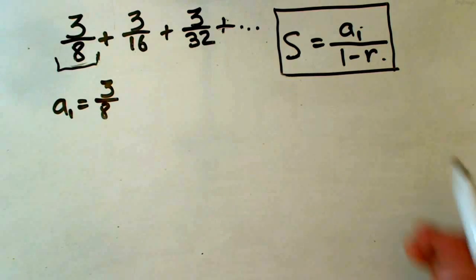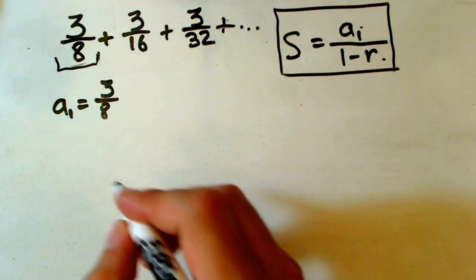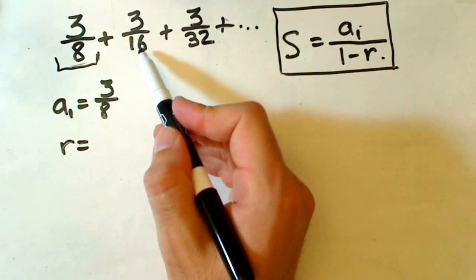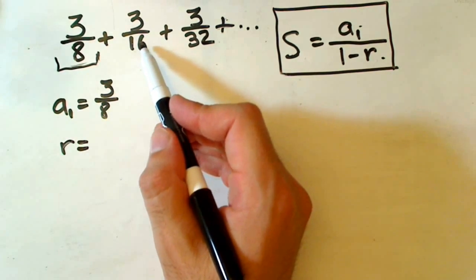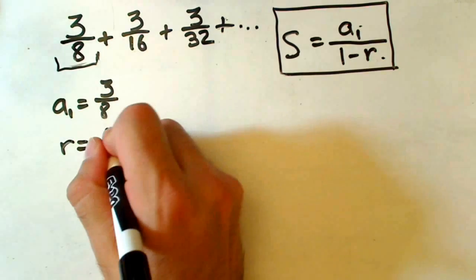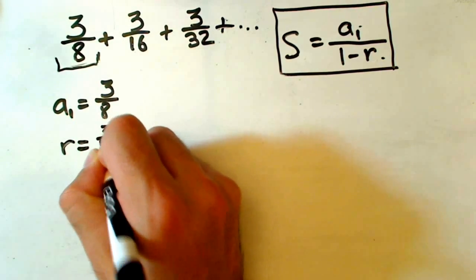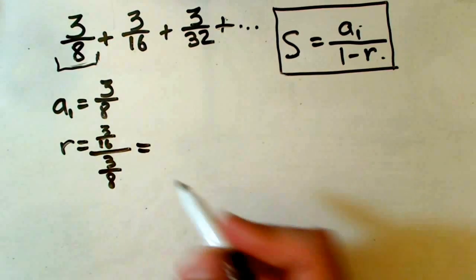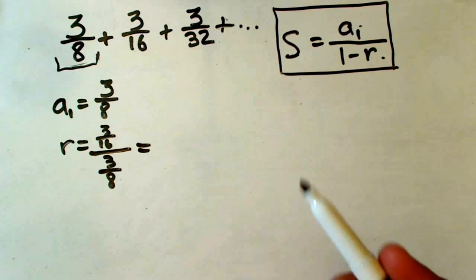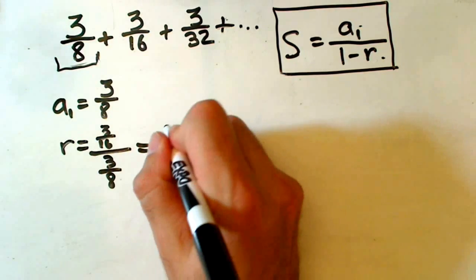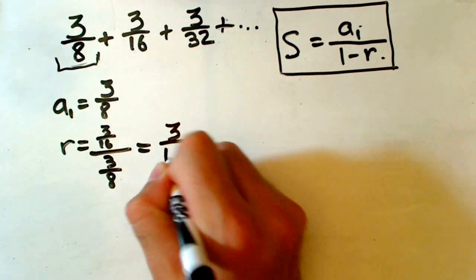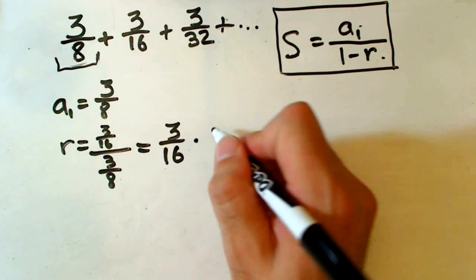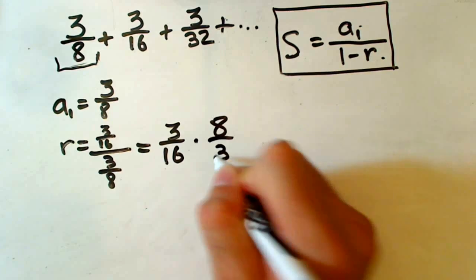Now we have to find the ratio and we are done. To find the common ratio, we divide the second term by the first, 3 over 16 divided by 3 over 8. When dividing two fractions, we multiply by the reciprocal, so we have 3 over 16 times 8 over 3.